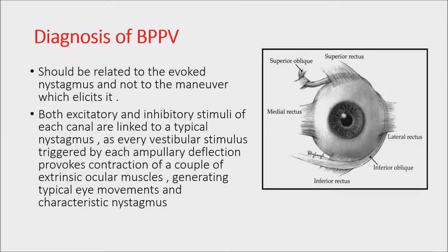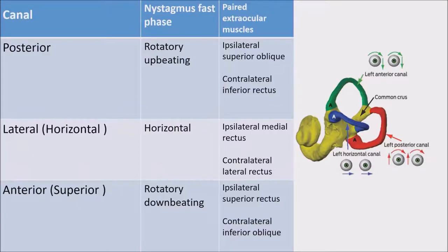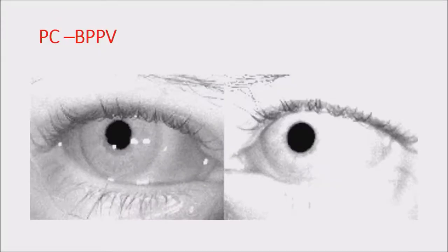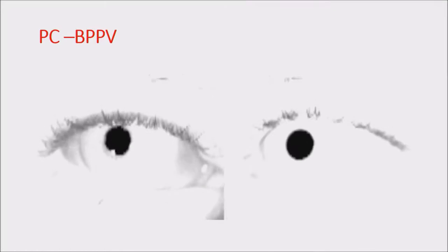Diagnosis should be related to the evoked nystagmus, not to the maneuver which elicits it. Sometimes horizontal or anterior canal BPPV can appear on the Dix-Hallpike. What matters is having a characteristic nystagmus pointing to a specific affected canal, not just feeling vertigo or having any nystagmus. The diagnosis must be based on nystagmus characteristics. Both excitatory and inhibitory stimuli of each canal are linked to typical nystagmus, as each ampullary deflection provokes contraction of specific extrinsic ocular muscles generating characteristic eye movements.